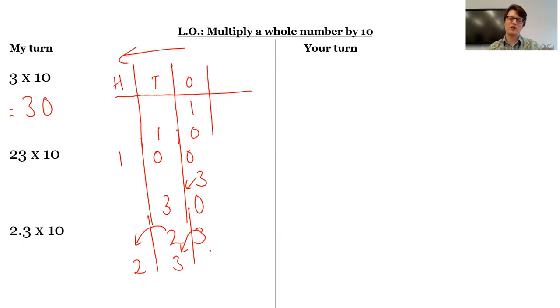Now I just need to remember to put in this zero here, this placeholder, because otherwise, that would just be the number 23. I need that zero to show that this 3 is in the tens, this 2 is in the hundreds. So I get 230.